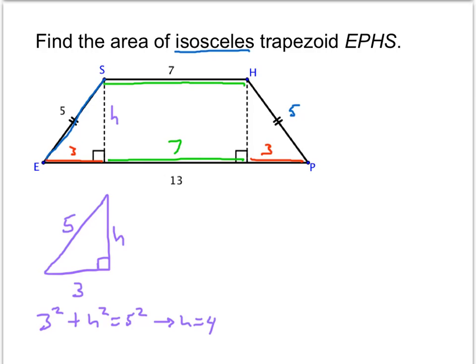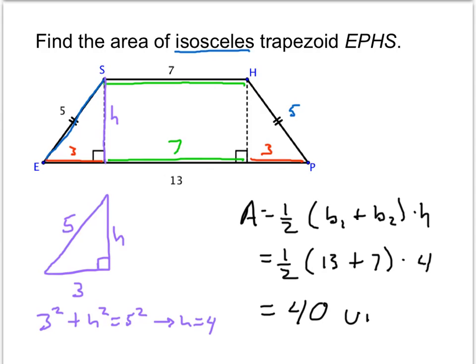Now we can substitute values into the area formula. The area is 1/2 times the two bases: the longer one was 13, the shorter one was 7, times the height, which we found to be 4. Plugging that into a calculator gives an area of 40 square units.